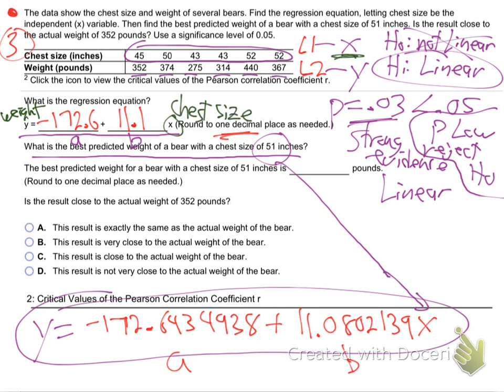The X values are the chest size, and the Y's are the weights. That's what we're doing in this whole section: coming up with these linear equations which are relationships between X and Y. We're trying to say: do chest size and weight have a linear relationship? The p-value is low, so yes they do. What is the equation of that linear relationship? There it is: A plus BX.